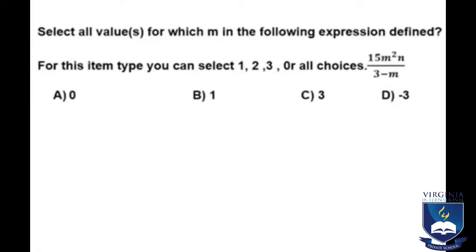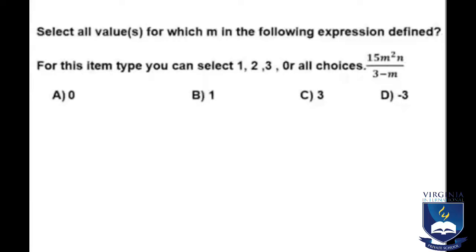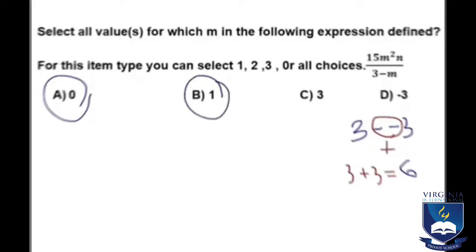For A, 3 minus 0 equals 3, so this is right. For B, 3 minus 1 equals 2, also correct. For C, 3 minus 3 is 0, so that's wrong. And for D, 3 minus -3, minus and minus will be plus, so 3 plus 3 is 6, so it's correct. The right answers are A, B, and D.